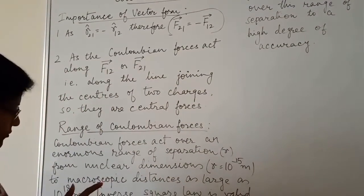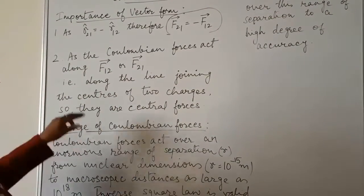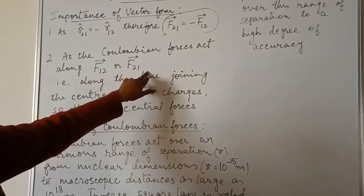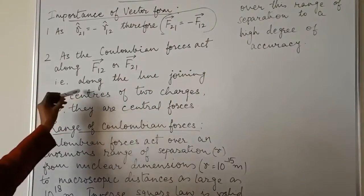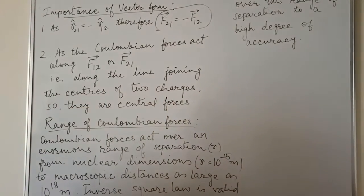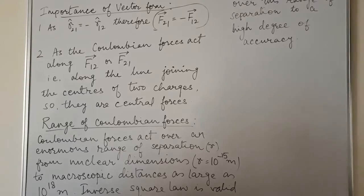Now number two, as the Coulombian forces act along F12 or F21, that is along the line, along the line joining the centers of two charges, so they are central forces.